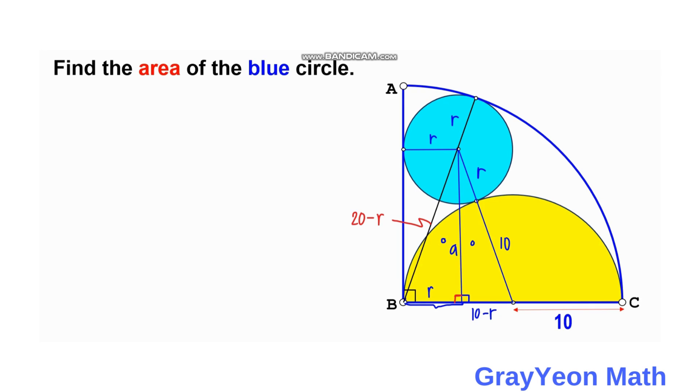So a squared is equal to a squared. So for this left side, so we have 20 minus r squared minus this r squared minus this r squared is equal to a squared. For the right, so we have r plus 10 squared minus 10 minus r squared. Plus 10 minus r squared minus r squared.